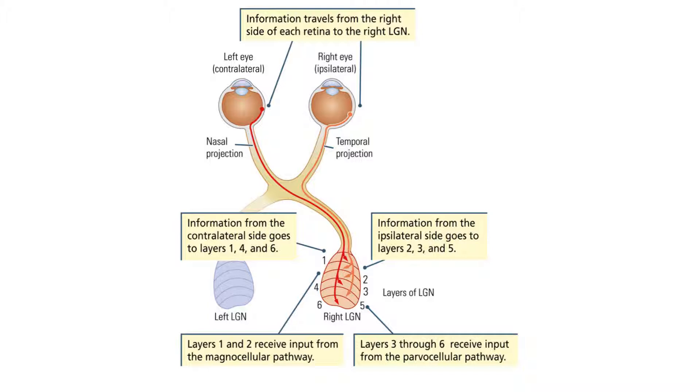The lateral geniculate nucleus of the thalamus has six layers. Layers 2, 3, and 5 are from the ipsilateral side and layers 1, 4, and 6 are from the contralateral side.